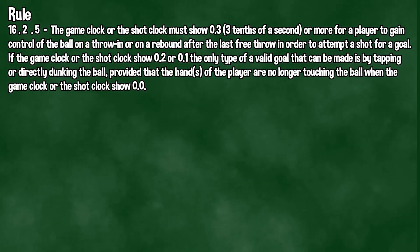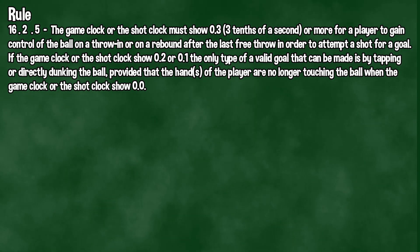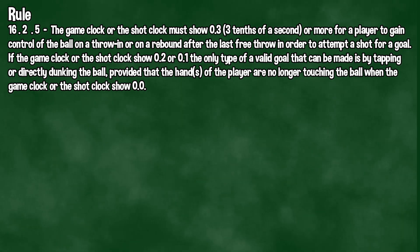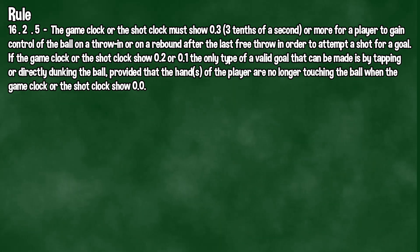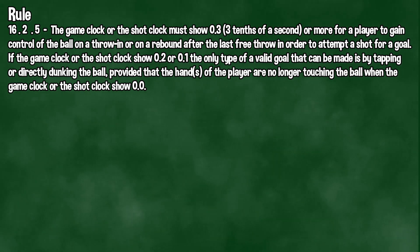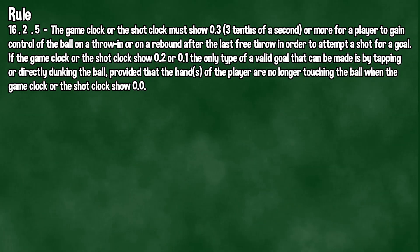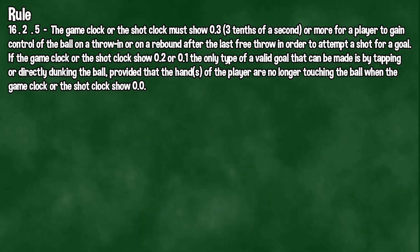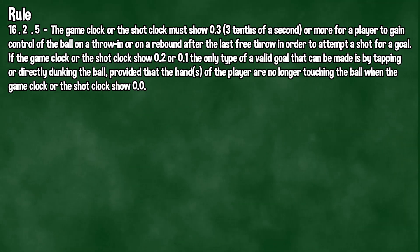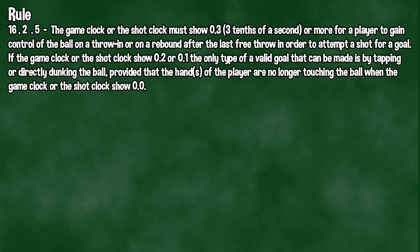The game clock or the shot clock must show 0.3 or more for a player to gain control of the ball on a throw-in or on a rebound after the last free throw in order to attempt a shot for a goal. If the game clock or the shot clock shows 0.2 or 0.1, the only type of valid goal that can be made is by tapping or directly dunking the ball, provided that the hands of the player are no longer touching the ball when the game clock or the shot clock shows 0.0.